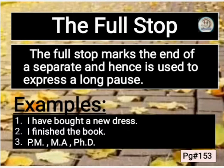Sentence کے مکمل ہونے پر full stop آخر پر آتا ہے کیونکہ full stop کا مطلب یہ ہے کہ اس بات کا مطلب یہاں تک complete ہو گیا ہے۔ Full stop sentence کے آخر پر آتا ہے۔ Example: 'I have bought a new dress' — یہاں بات مکمل ہو رہی ہے، اسی لئے sentence کے complete ہونے کے بعد آخر پر full stop آئے گا۔ اسی طرح: 'I finished the book'۔